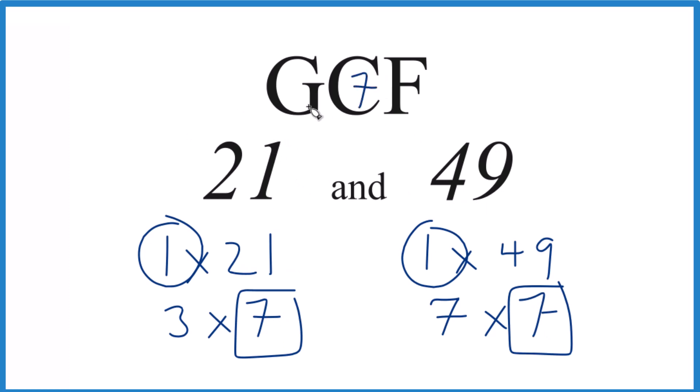So in answer to our question, the GCF for 21 and 49 is 7. There are other ways you could do this, but for smaller numbers like this, this is pretty quick. This is Dr. B, thanks for watching.